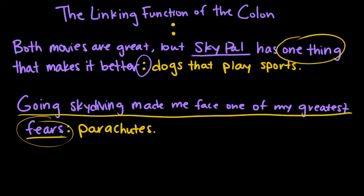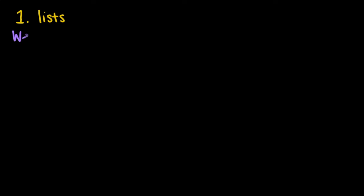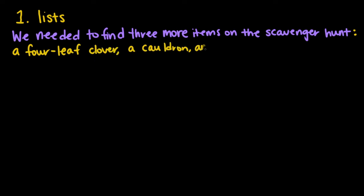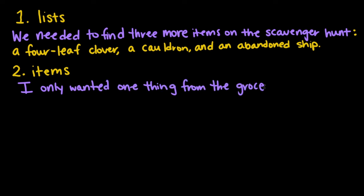Another subset of the colon's ability to link things is that it can introduce things. One thing the colon can introduce is a list. I could say: we needed to find three more items on the scavenger hunt — a four-leaf clover, a cauldron, and an abandoned ship. The second thing a colon can introduce is an item. If I'm talking about the other day when I had a weird legume craving, I could say: I only wanted one thing from the grocery store — peanuts.